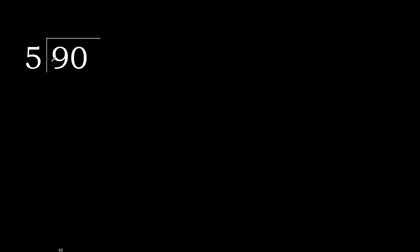90 divided by 5. 9 is not less, therefore work with 9. 5 multiplied by which number is nearest to 9 but not greater? 5 multiplied by 2 is 10 — 10 is greater. 5 multiplied by 1 is 5, which is not greater. 9 minus 5 is 4. Next.